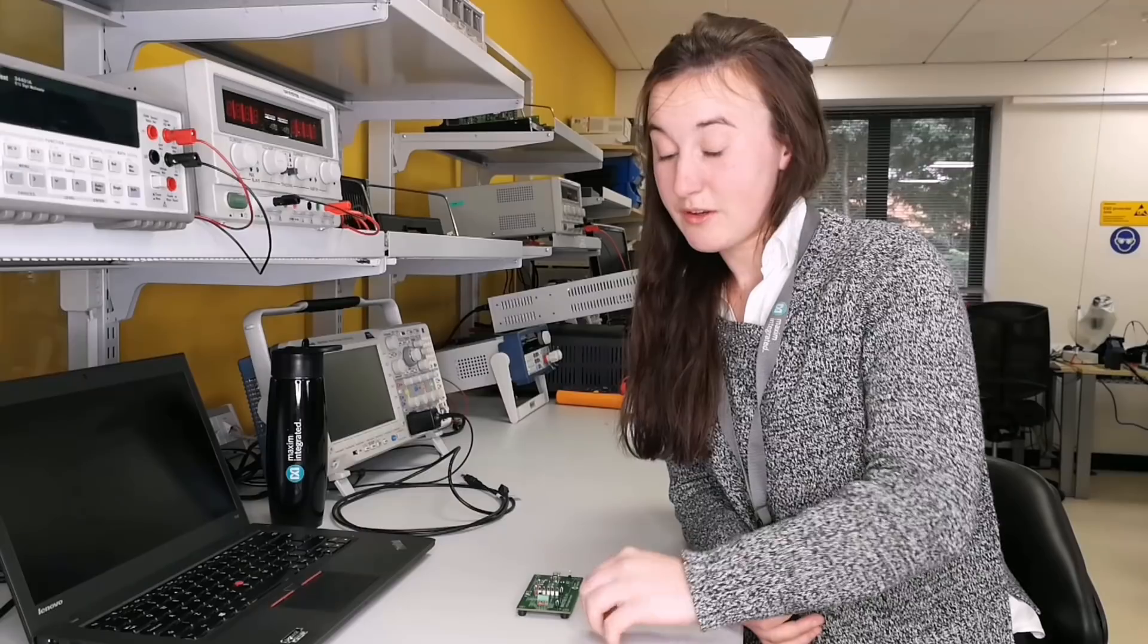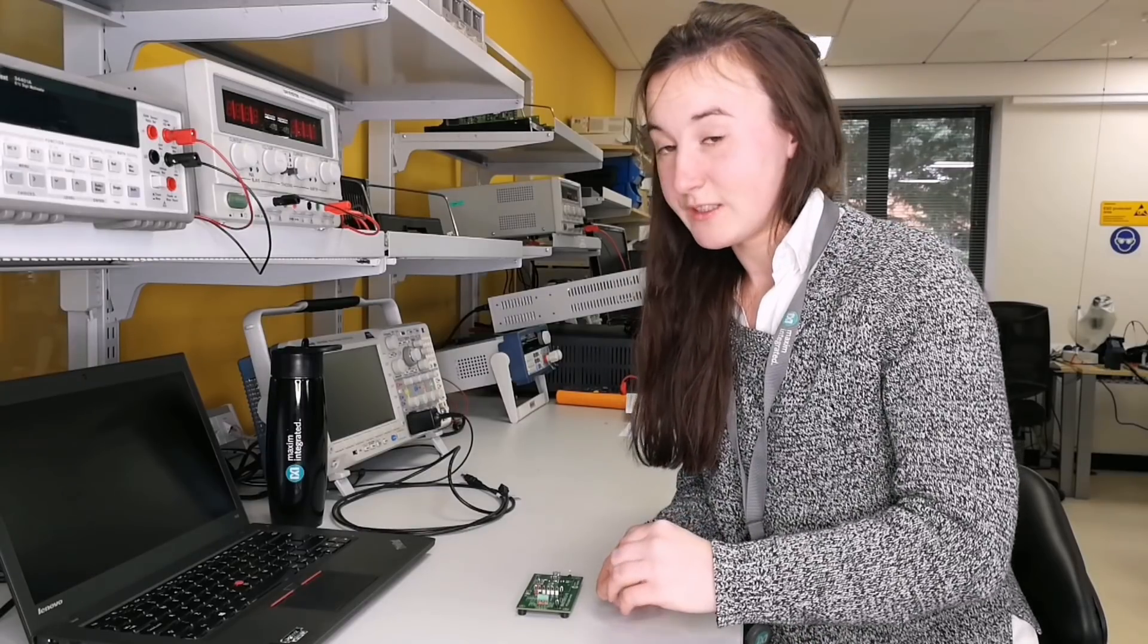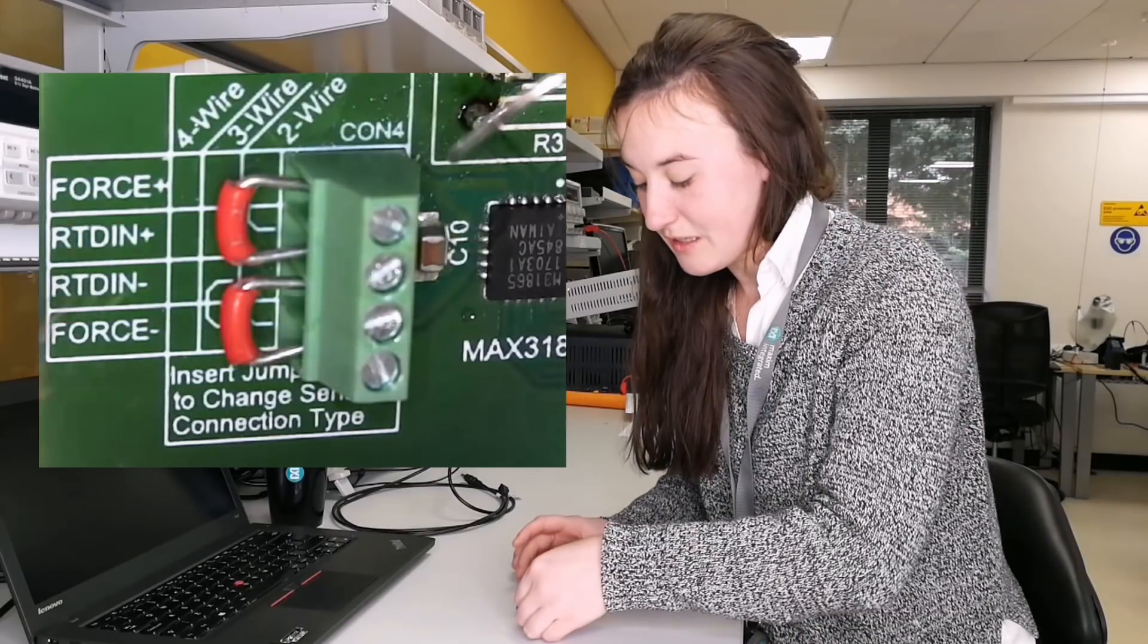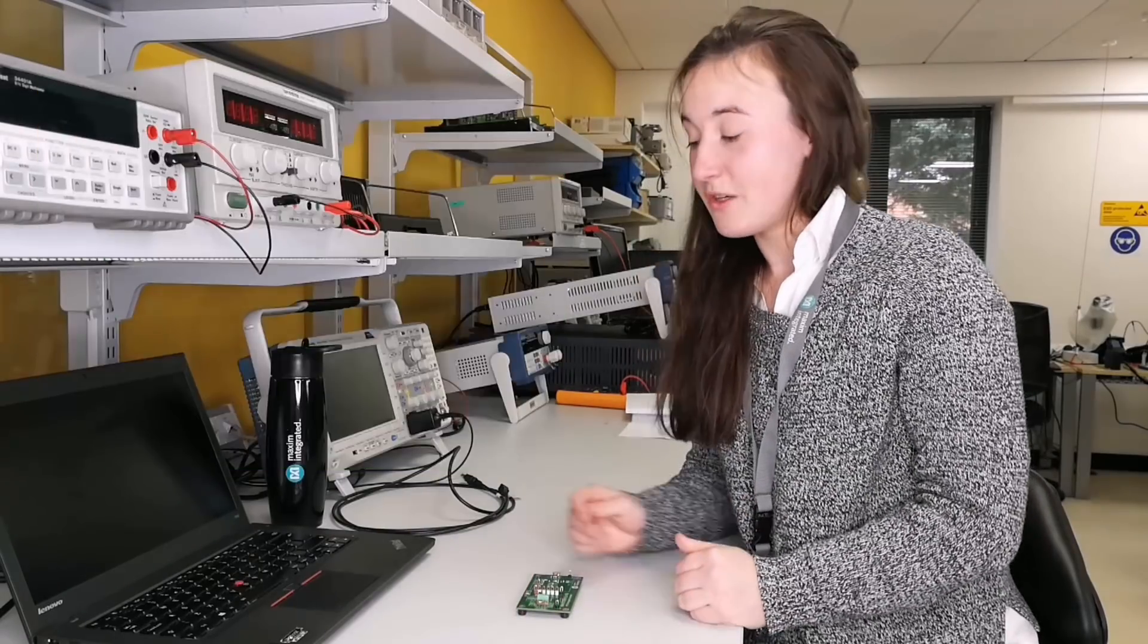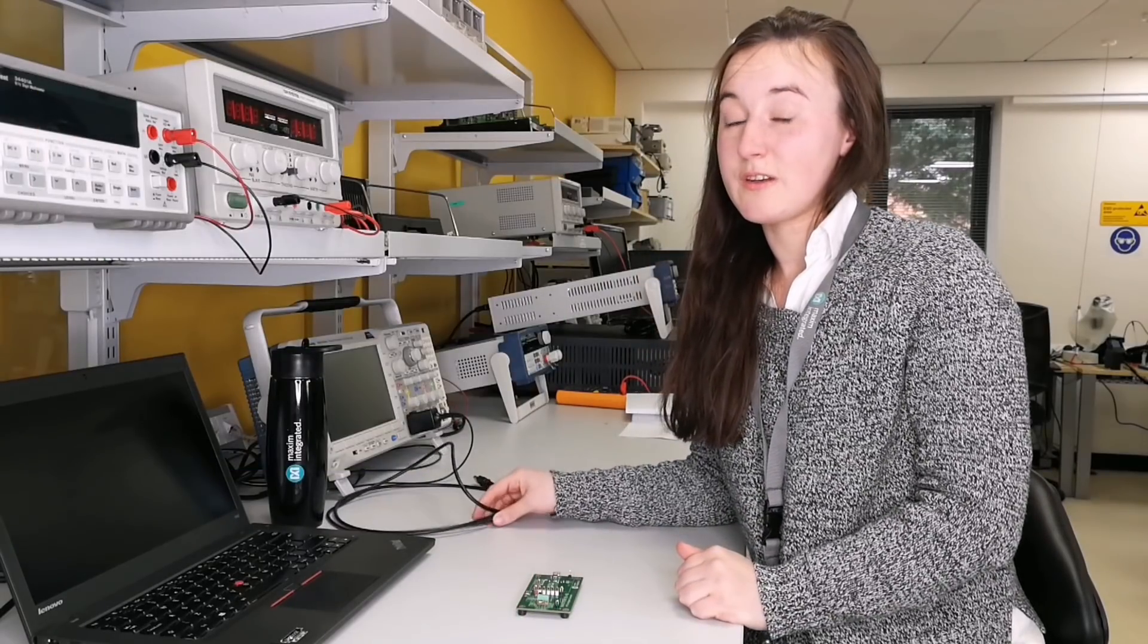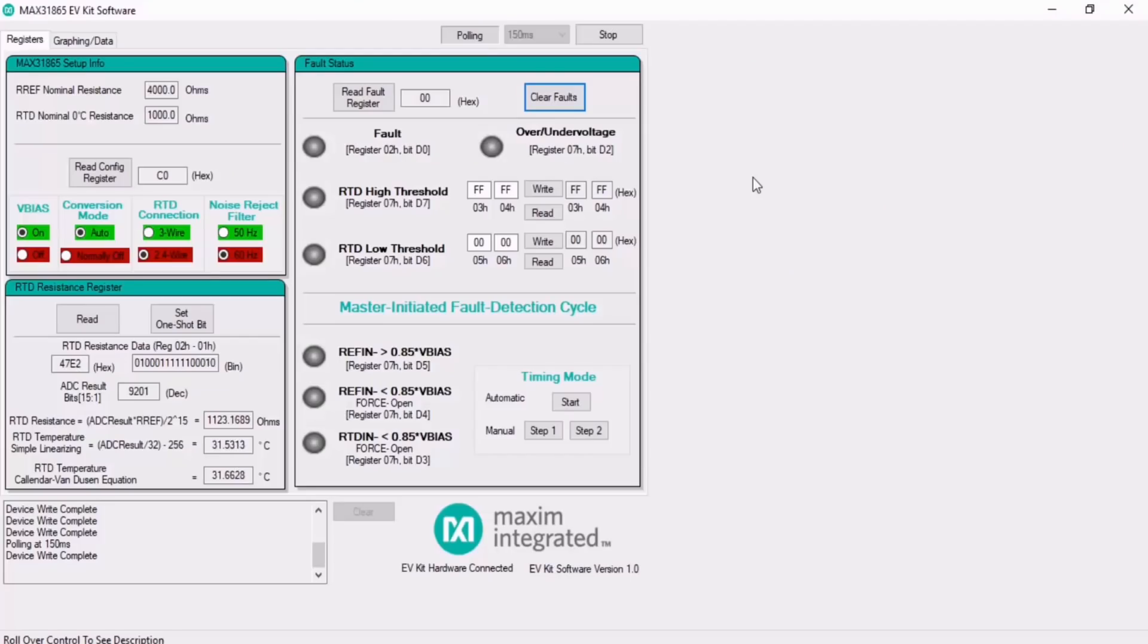You just put your RTD in here at RTD in plus and RTD in minus, and you use the USB wire provided to connect it to your PC. The GUI then performs the linearization calculations and displays the real-time temperature being measured by the RTD.